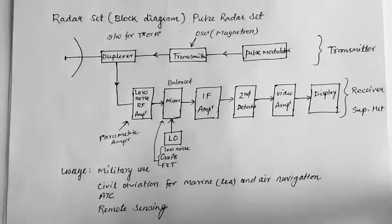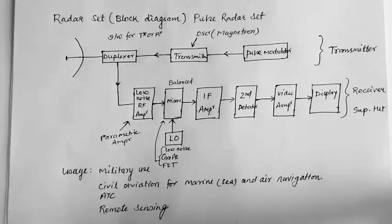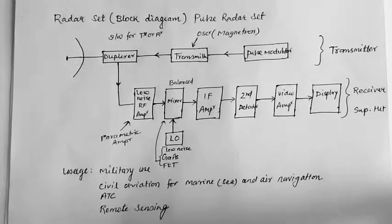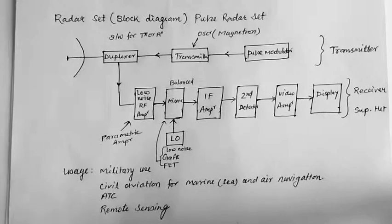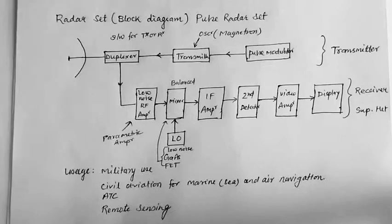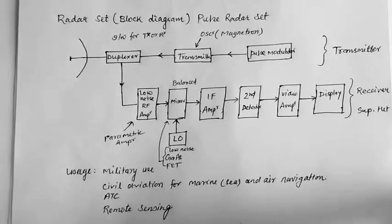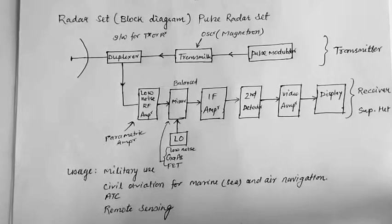The same is ATC and remote sensing. Remote sensing is for identifying remote objects like planets, earth, moon, and many more things which are far from us and we want to detect and know about them. So remote sensing is another application.